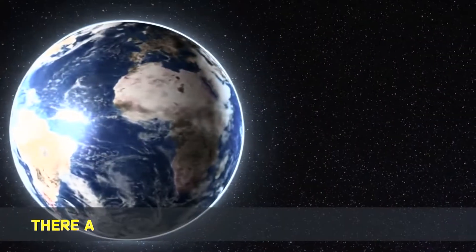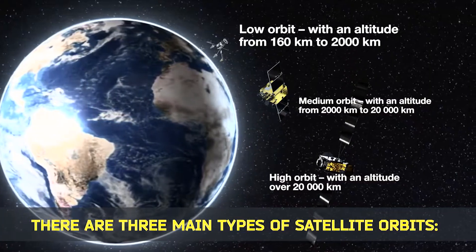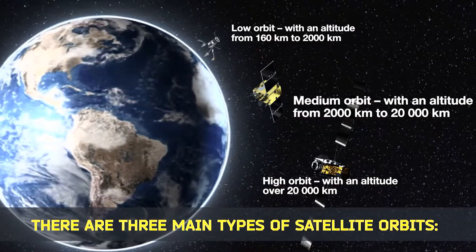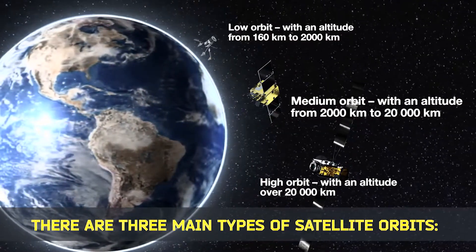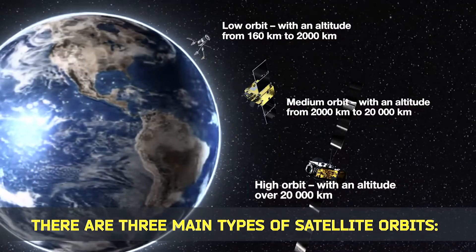There are three main types of satellite orbits. Low orbit with an altitude from 160 km to 2,000 km. Medium orbit with an altitude from 2,000 km to 20,000 km. And high orbit with an altitude over 20,000 km.